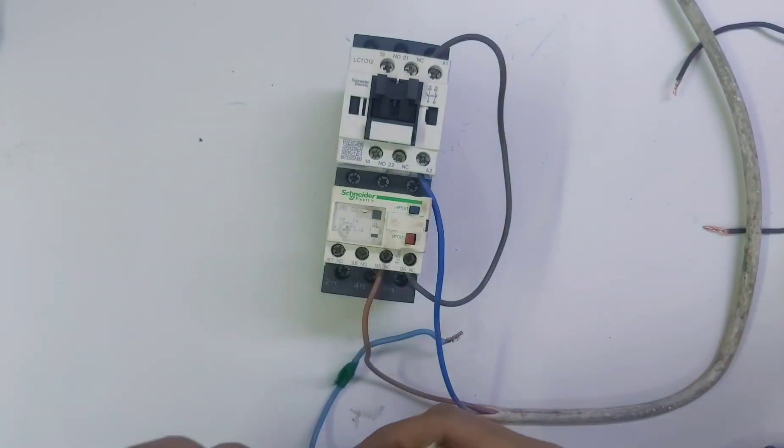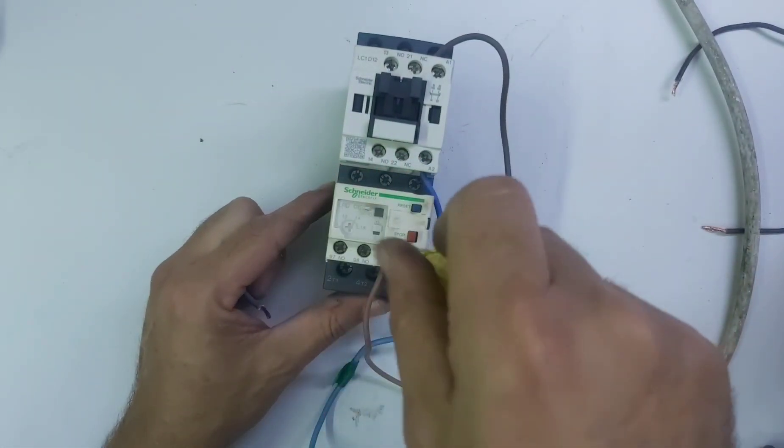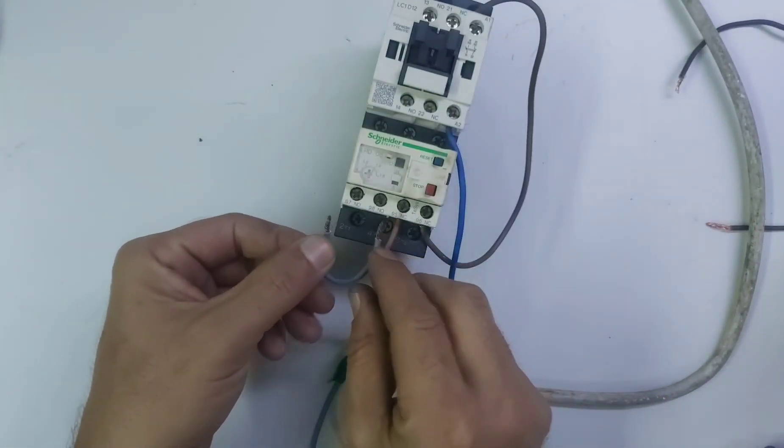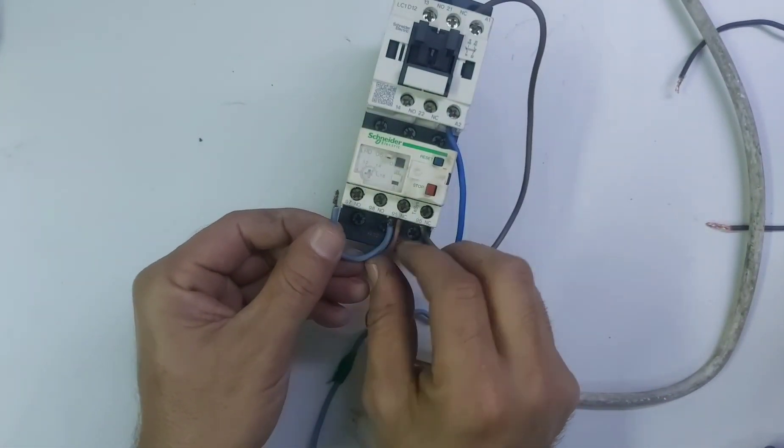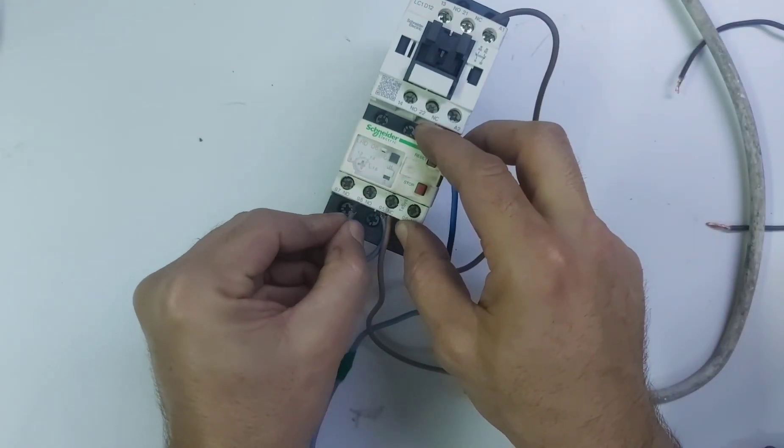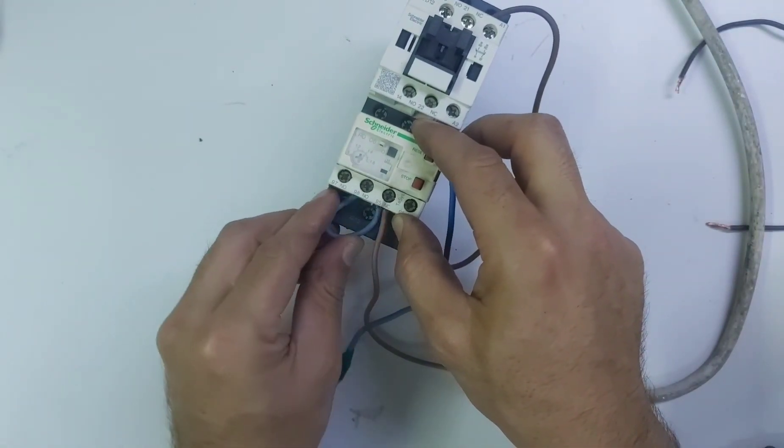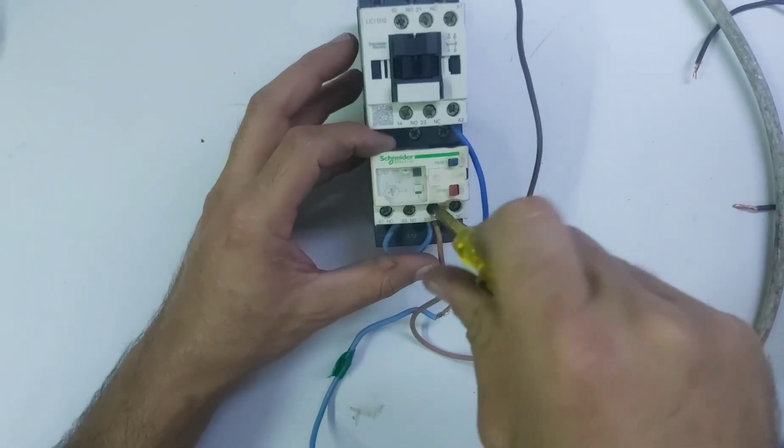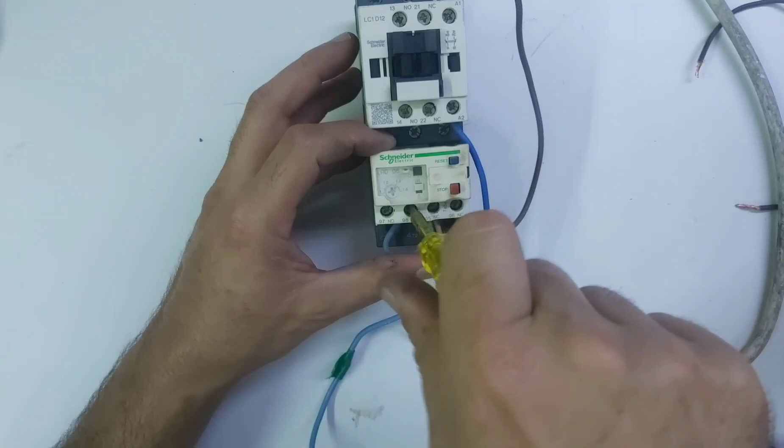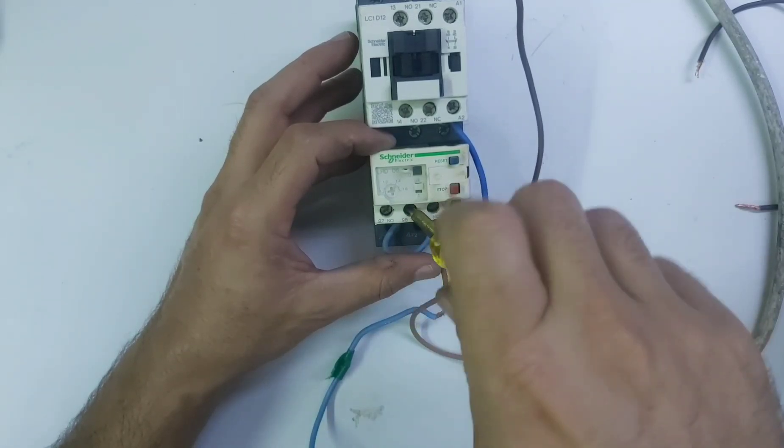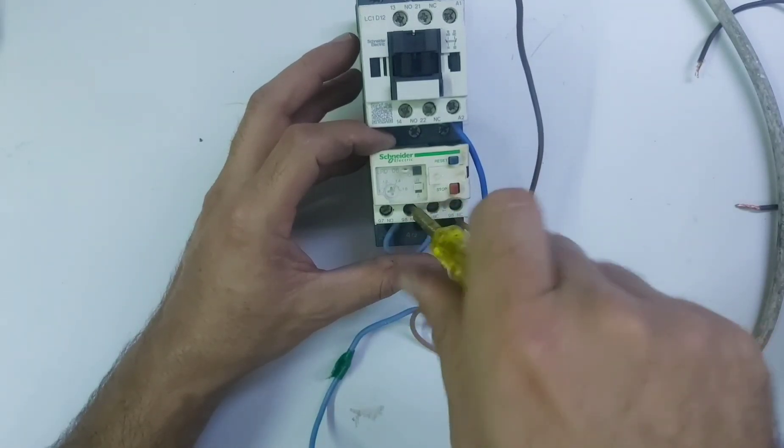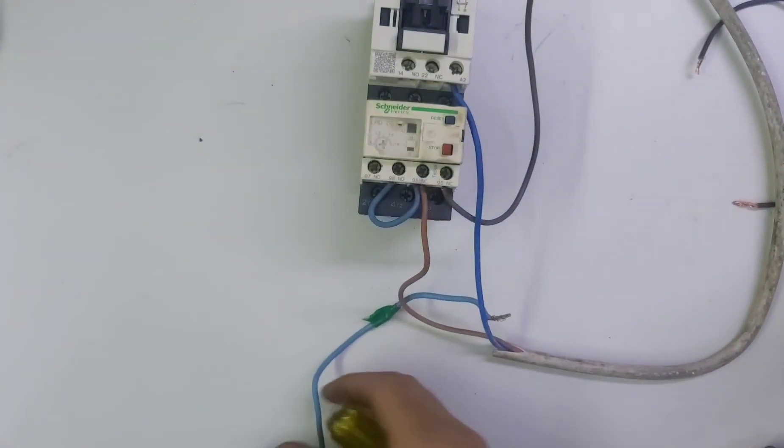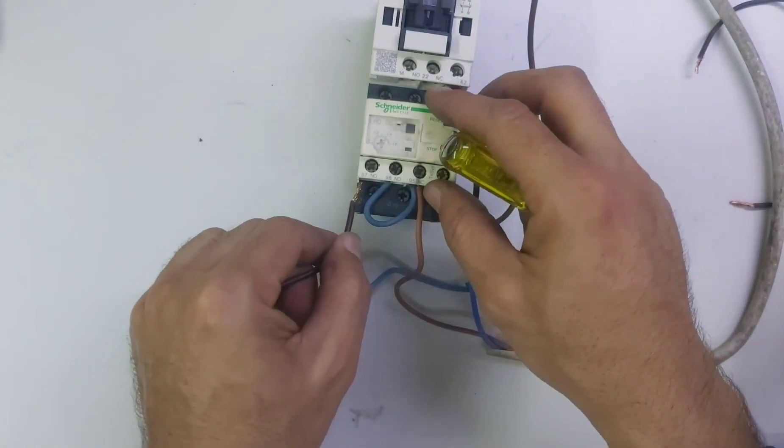And here you need to loop for the trip indicator. This loop will connect here, this loop will connect here from 95 to 98. And you need to connect trip indicator, so trip indicator you need to connect number 97.